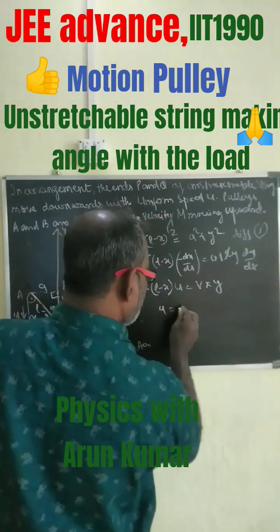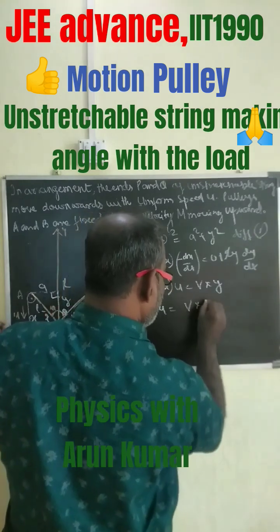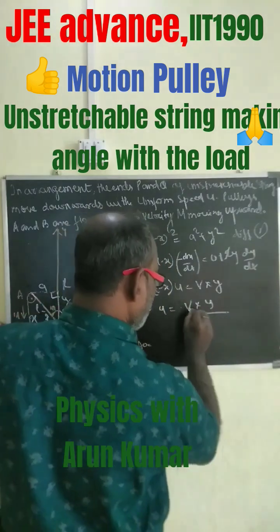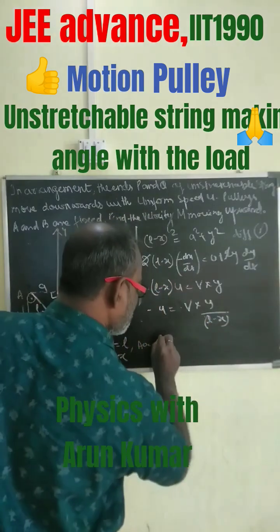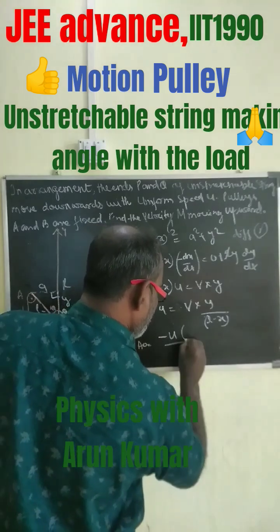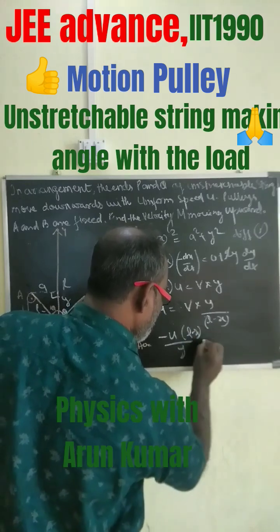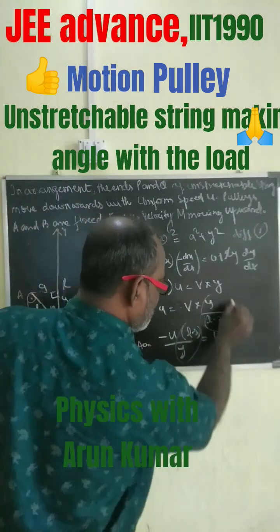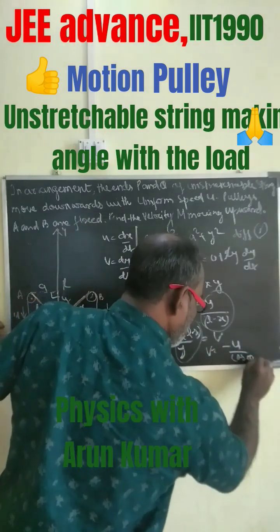From here, rearranging: minus u equals v times y divided by (L minus x), so v equals minus u times (L minus x) divided by y. But (L minus x) divided by y equals cos theta. Therefore, v equals minus u divided by cos theta.